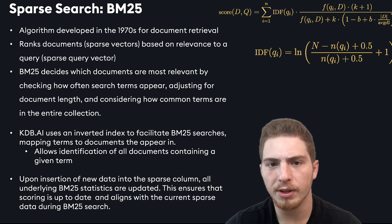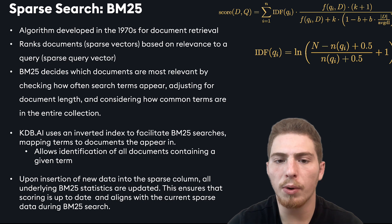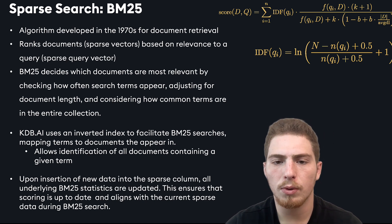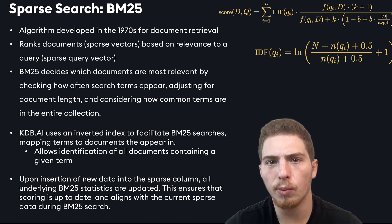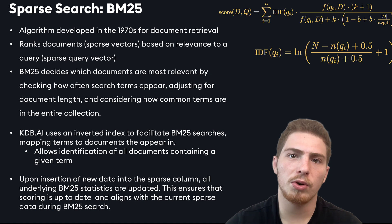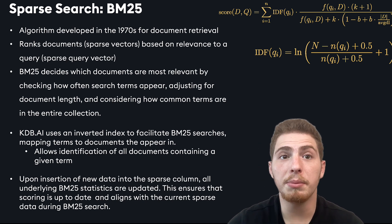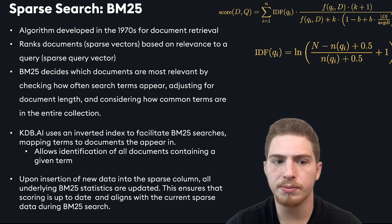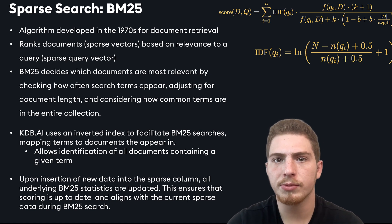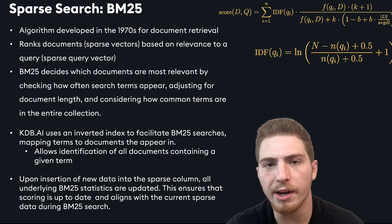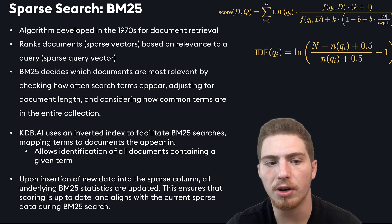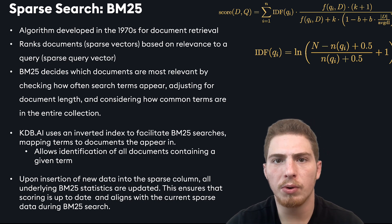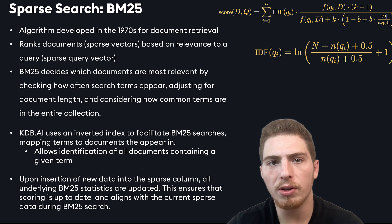At a high level, what this means is if we have a query like 'what are neural networks?', words that are very common in our documents — like 'what are' — are going to be weighted way less, or even weighted at zero, compared to the words 'neural networks', which are much rarer. KPI uses an inverted index to facilitate BM25 searches, which means we map terms to the documents they appear in. This allows us to very quickly identify all the documents that contain a given term. Once we insert new data into our sparse column, all the underlying BM25 statistics have to be updated so we maintain an accurate search.